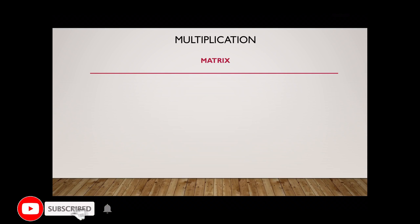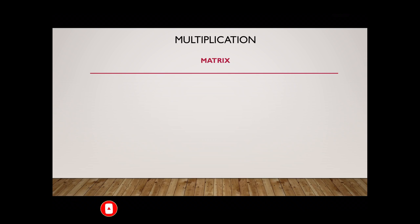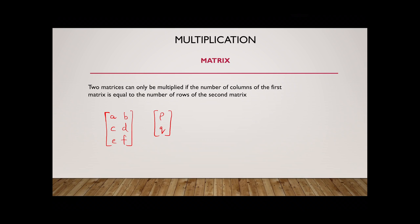Welcome back. In this video we're going to be talking about matrix multiplication — how two matrices are multiplied. This is one of the most important concepts in matrices. Two matrices can only be multiplied if a certain condition is met: the number of columns of the first matrix must be equal to the number of rows of the second matrix.